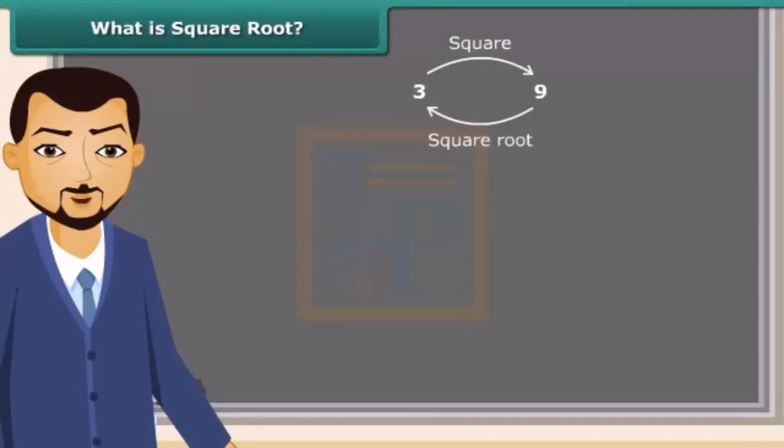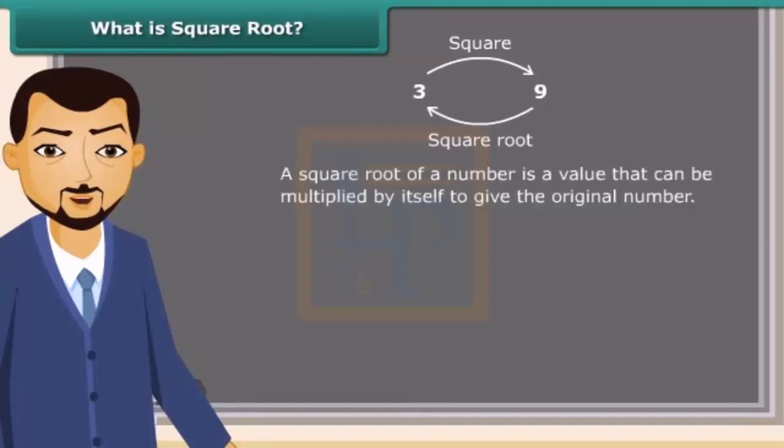Square root is an inverse operation of squaring. It is a value that can be multiplied by itself to give the original number. So we can say when 4 is multiplied by 4, we get 16, which means 4 is a square root of 16. Square root is represented by a special symbol called the radical. We can use it like this: square root of 25 is 5.